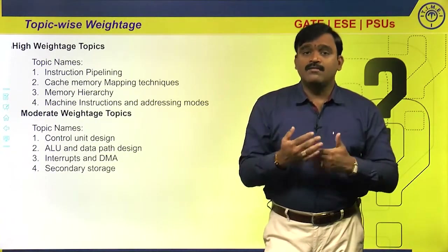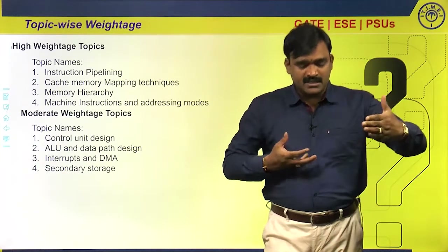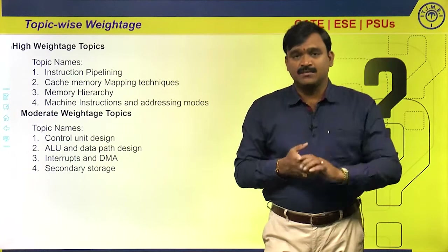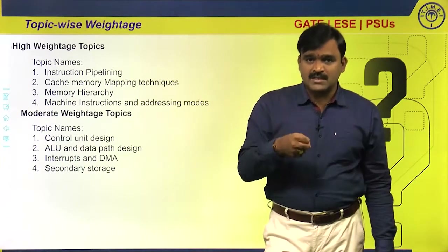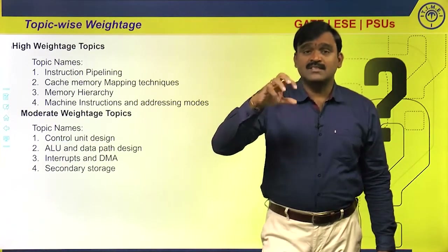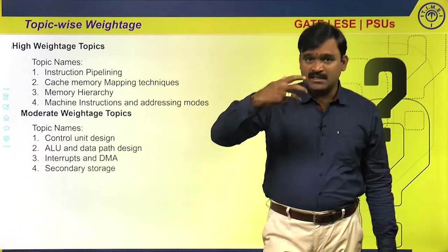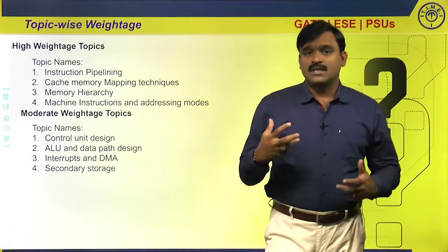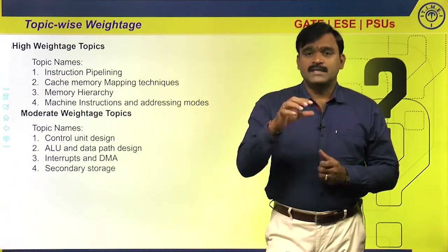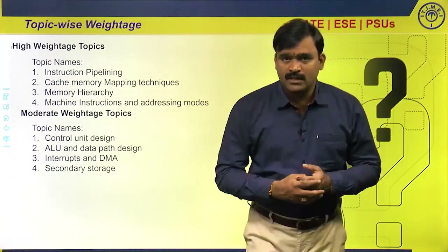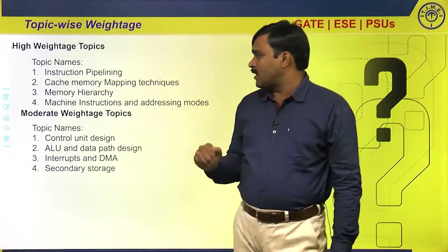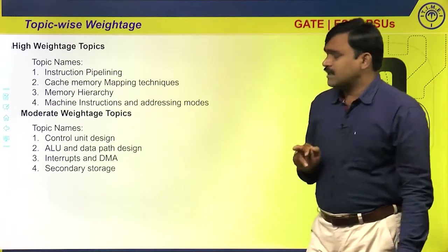Questions also cover handling of hazards. A hazard occurs when one instruction gets stuck because of data required from the previous instruction, or because of a branch instruction where we must wait until the branch address is known. Focus on these types of questions, and also throughput — how many instructions can execute in one second. These questions come from instruction pipelining.